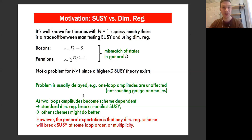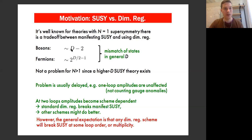Let me start with some motivation that underlies this project. It's well known that if you stick to supersymmetry, in particular N equals one supersymmetry, there's a trade-off between manifesting supersymmetry and using dimensional regularization. The reason is that bosons typically grow linearly with space-time dimension, whereas fermions grow exponentially, so in general D there's going to be a mismatch.